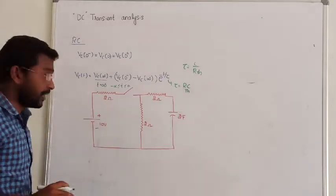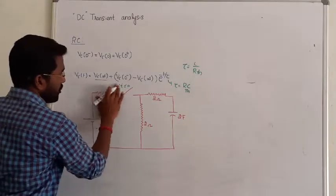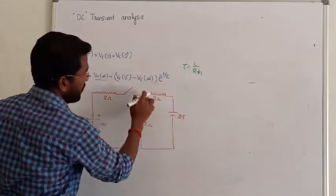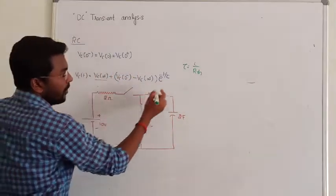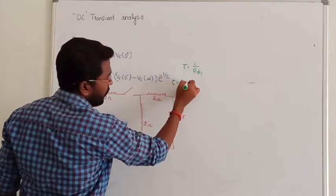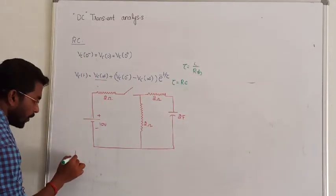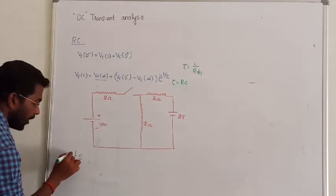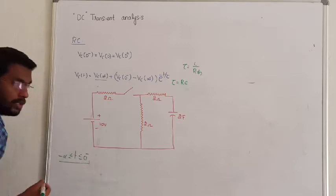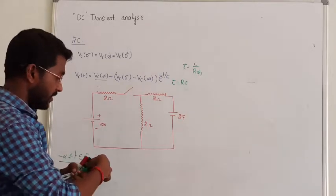So in this case, the question is: first we will see how to calculate all these parameters. We will calculate this problem one by one. Case number one: before operating the switch, from minus infinity to 0⁻.